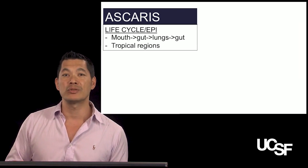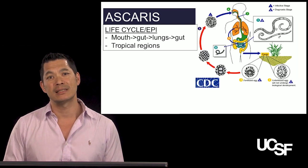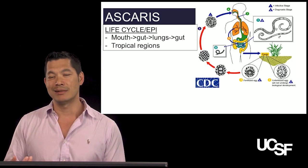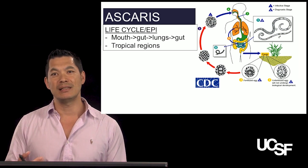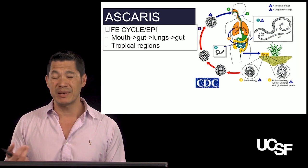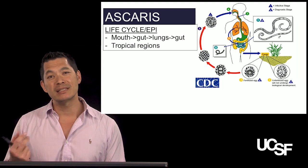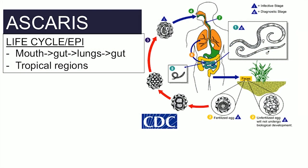Ascaris is seen mainly in tropical regions, not so much in the United States. The life cycle follows the CDC transmission cycle: eggs are ingested through the mouth via contaminated food or drink, larvae hatch out and go across the membrane, they go to the lungs, up the trachea, are swallowed into the gut, and the cycle continues.